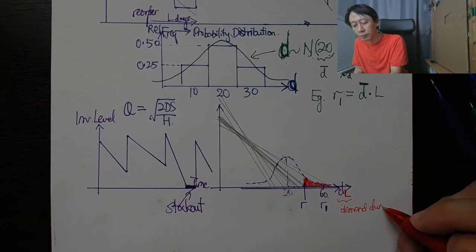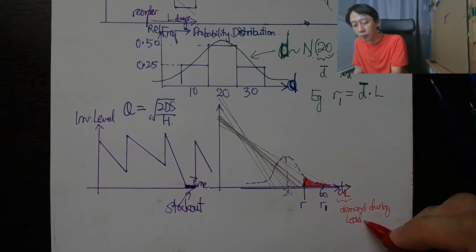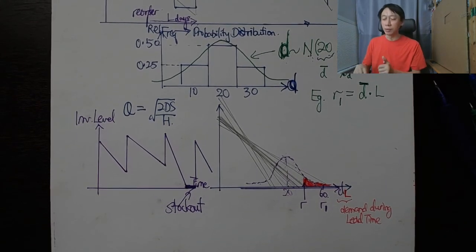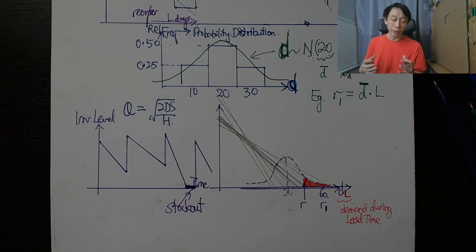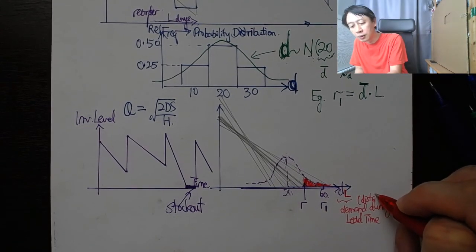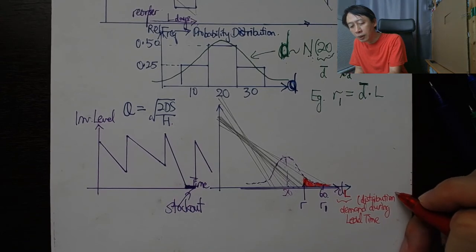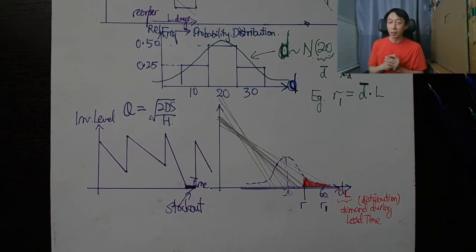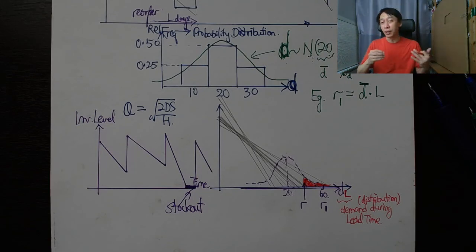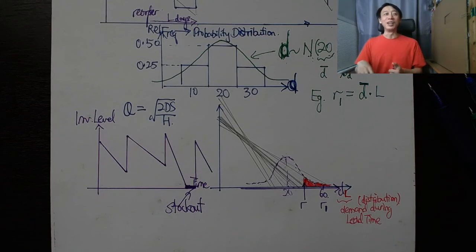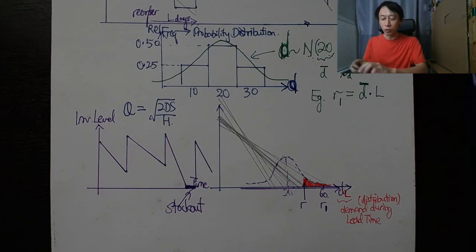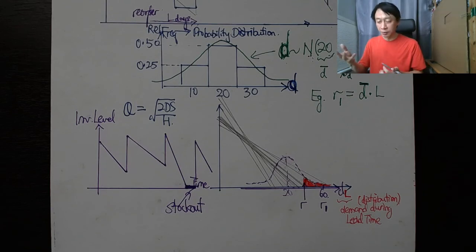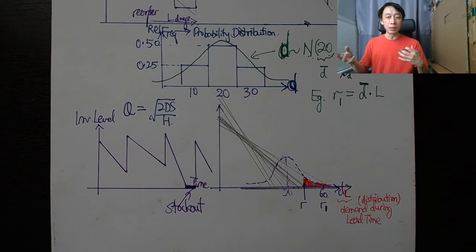So dL, demand during lead time—if L is a constant three days, then dL will be the demand distribution. Let's just put a bracket there. This is demand distribution during lead time. Let's not forget that d, the daily demand, is a normal bell curve. So demand during three days instead of one day is not going to be a constant. It is basically going to be—using statistics, we will have to derive what is the distribution of demand during three days lead time when we're given a single day demand.